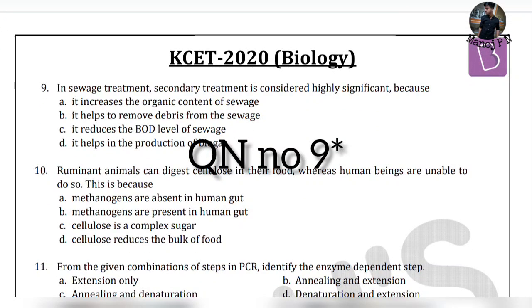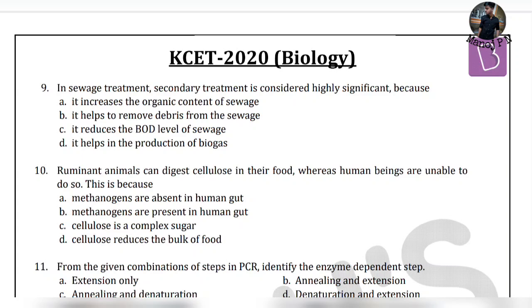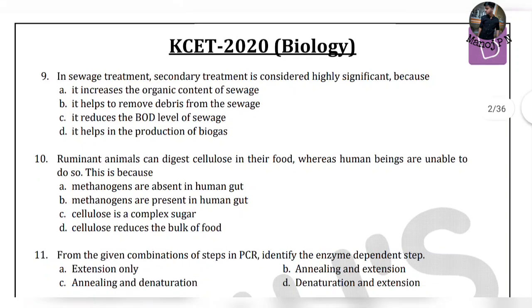Question number 9: in sewage treatment, secondary treatment is considered highly significant because in the second stage, the first stage uses physical separation of solids. The second step reduces the biological oxygen demand. This is important — the biological oxygen demand decrease. If the process is carried out, you will be able to get water eligible for release. So the answer is option C: it reduces the biological oxygen demand level of the sewage.